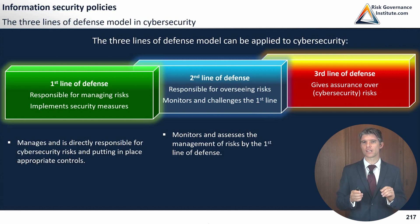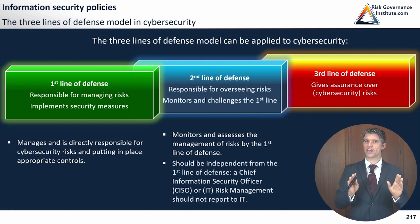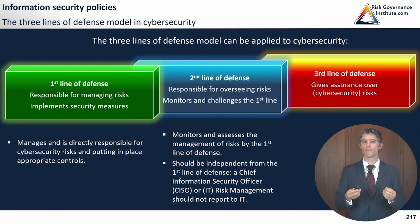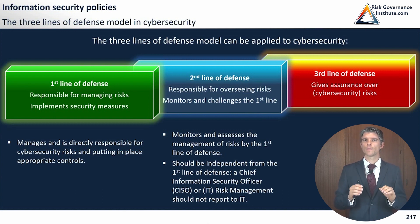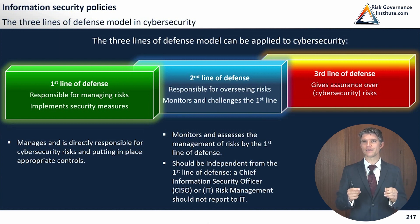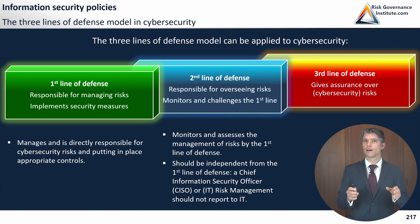The second line of defense monitors and assesses the management of risks by the first line of defense. The key point is that it should generally be independent from the first line. A Chief Information Security Officer or a risk management department should not generally report to IT — we'll put that in quotation marks for now because we'll see later who the CISO actually reports to in practice. A good place to position a CISO is definitely in the second line of defense, with a good degree of independence in their role.